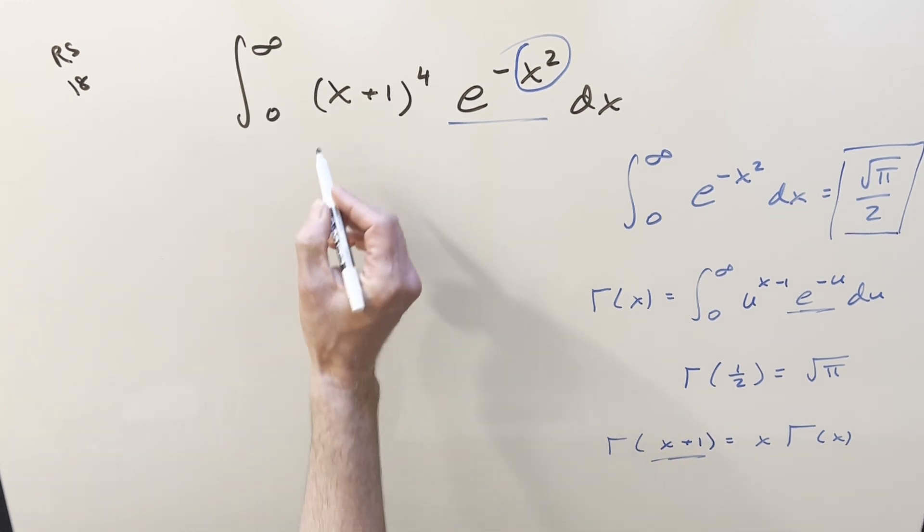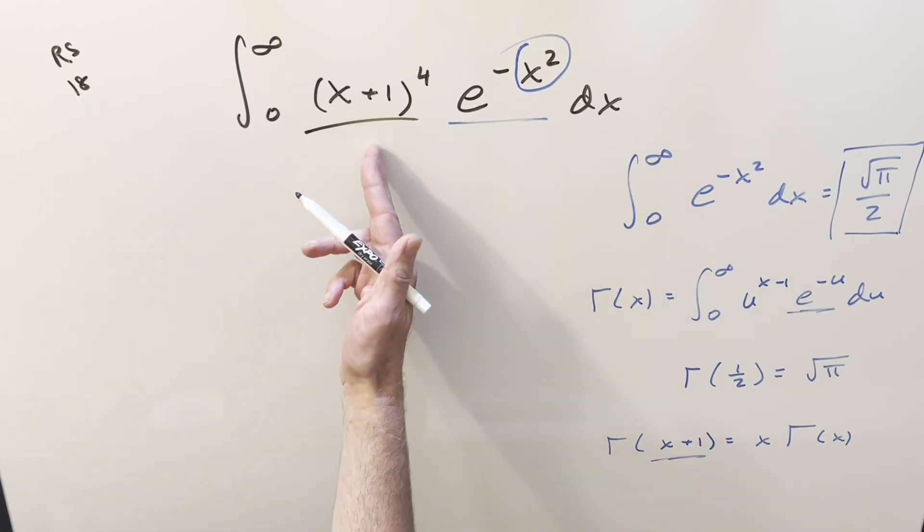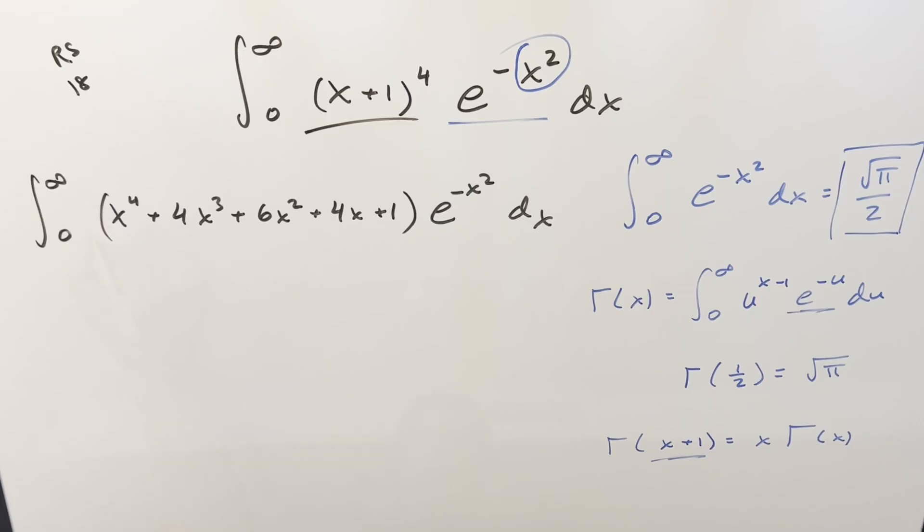So to get started with it, I want to focus on the (x + 1) to the 4th. Just distribute that out or use binomial theorem or Pascal's triangle on what you're going to have. Now from here, what we could do is we could break this up into five integrals, although I want to kind of try to save some time.